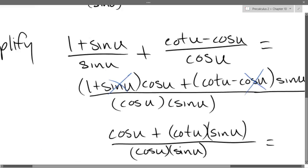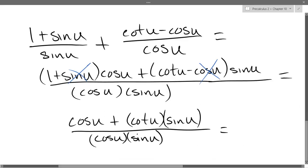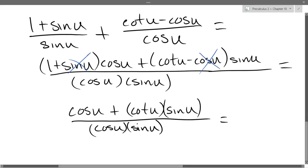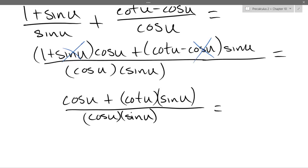If I'm skipping more steps than you feel comfortable with, that's completely okay. What you want to do is write the intermediate step in your notes, or put a little asterisk so you can come back and write it down later. Any other questions on cosine plus cotangent sine?